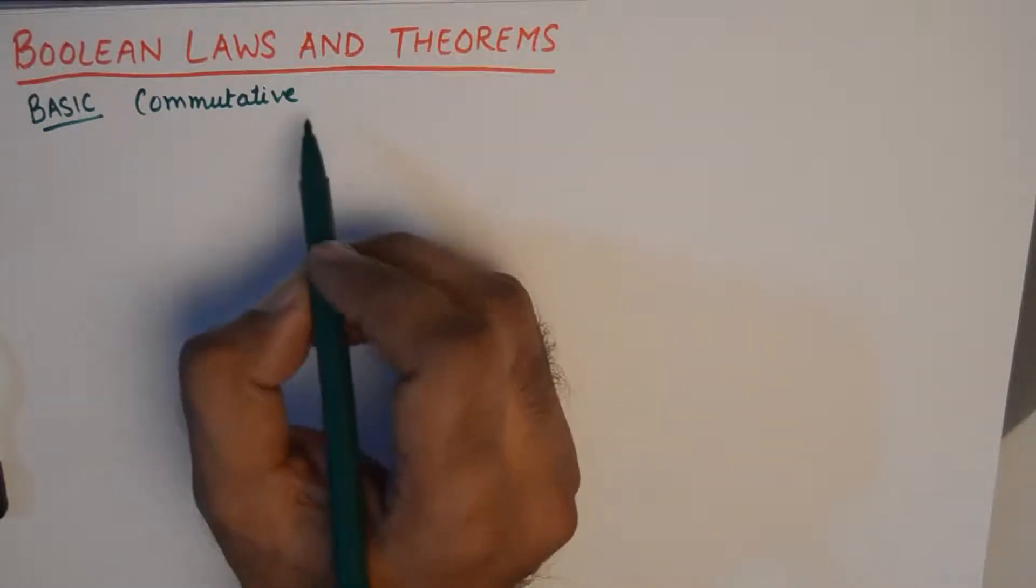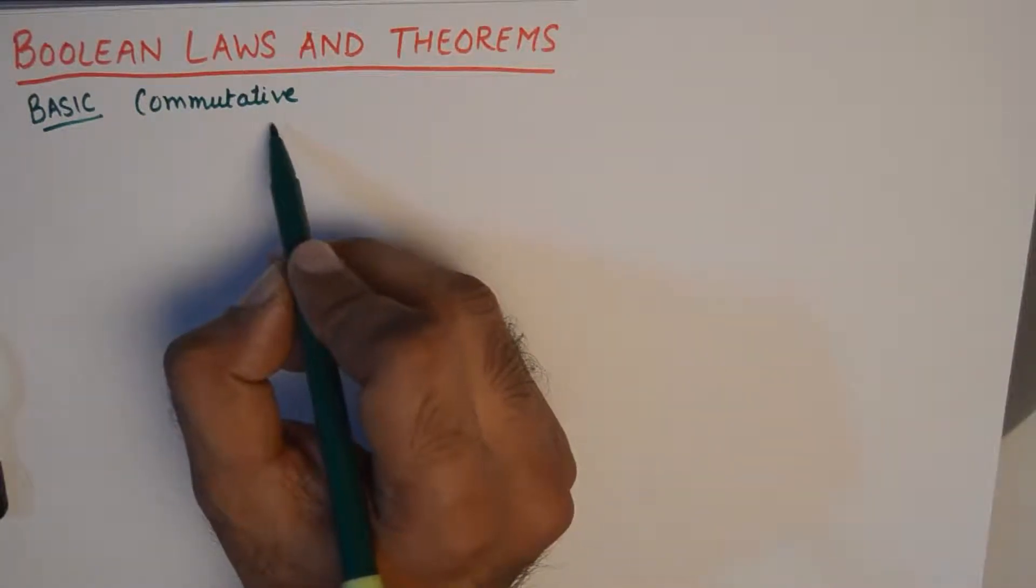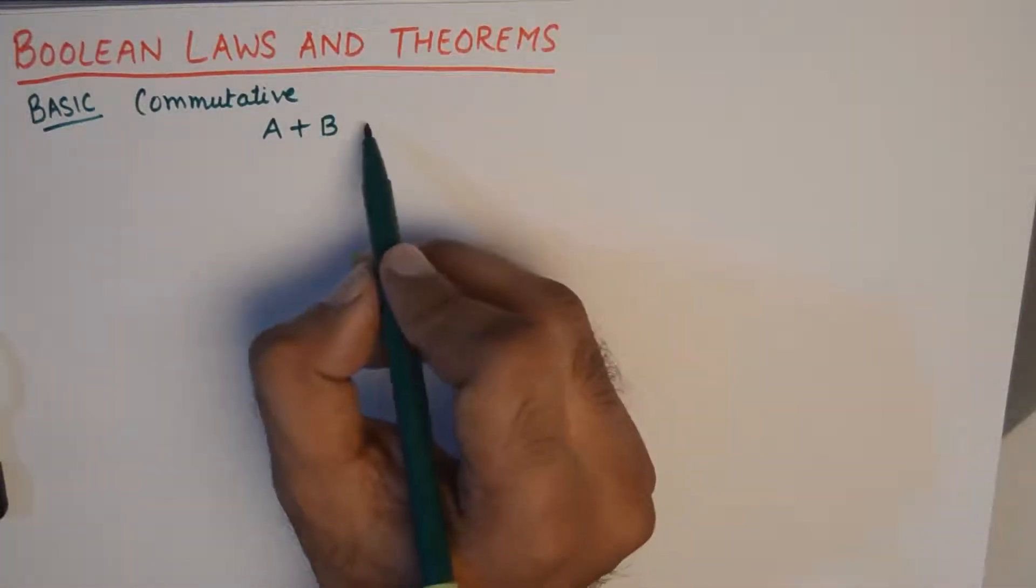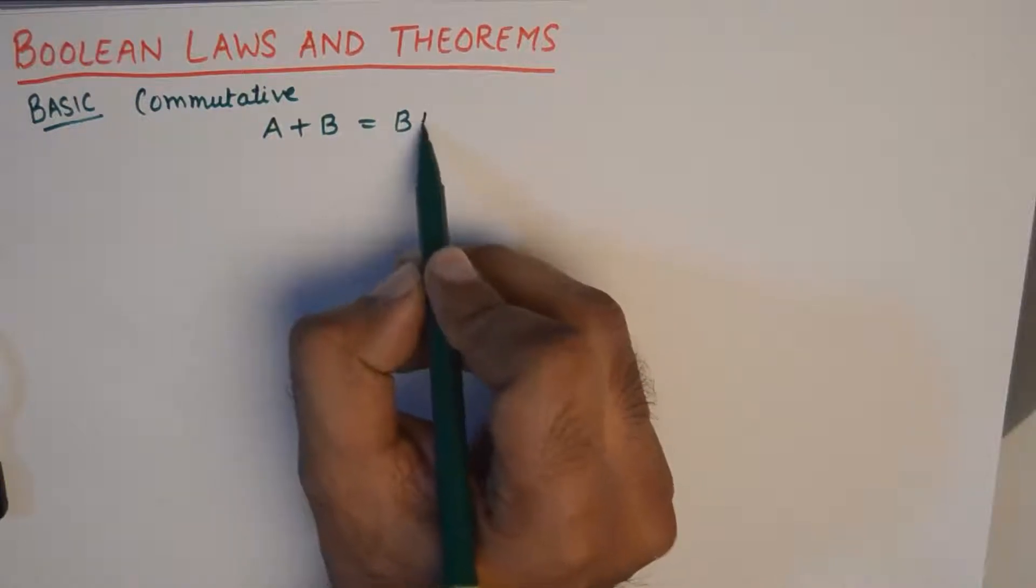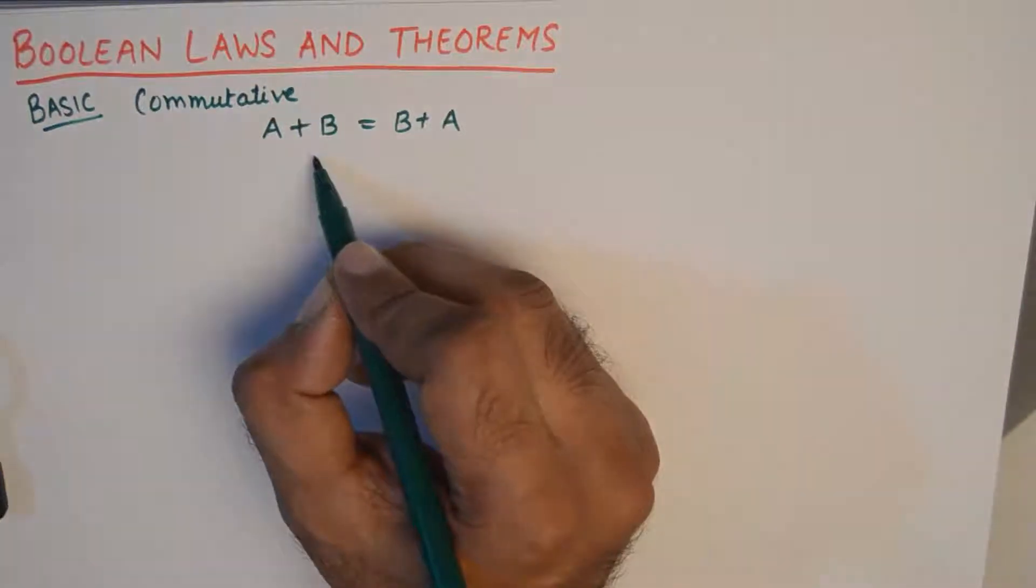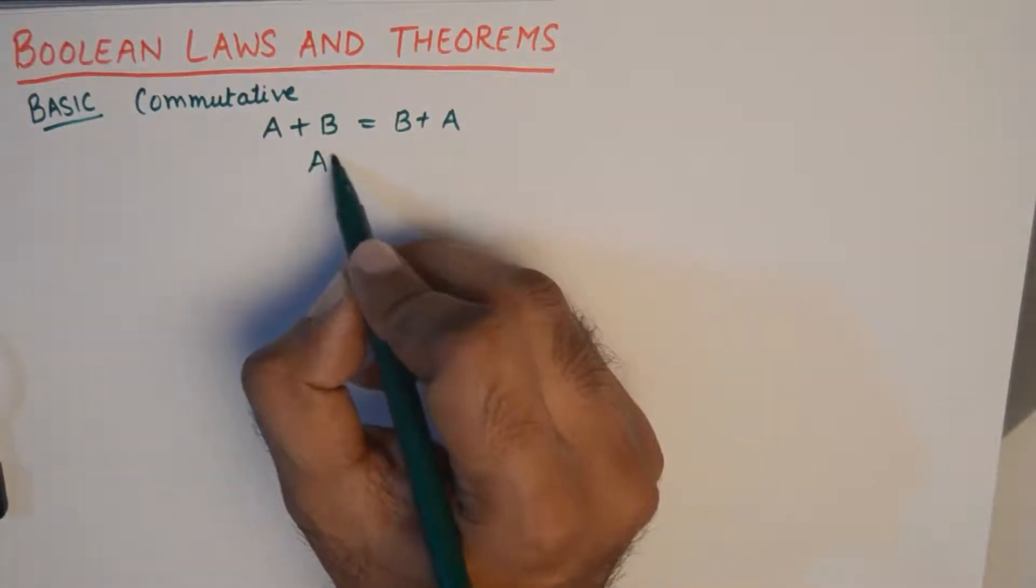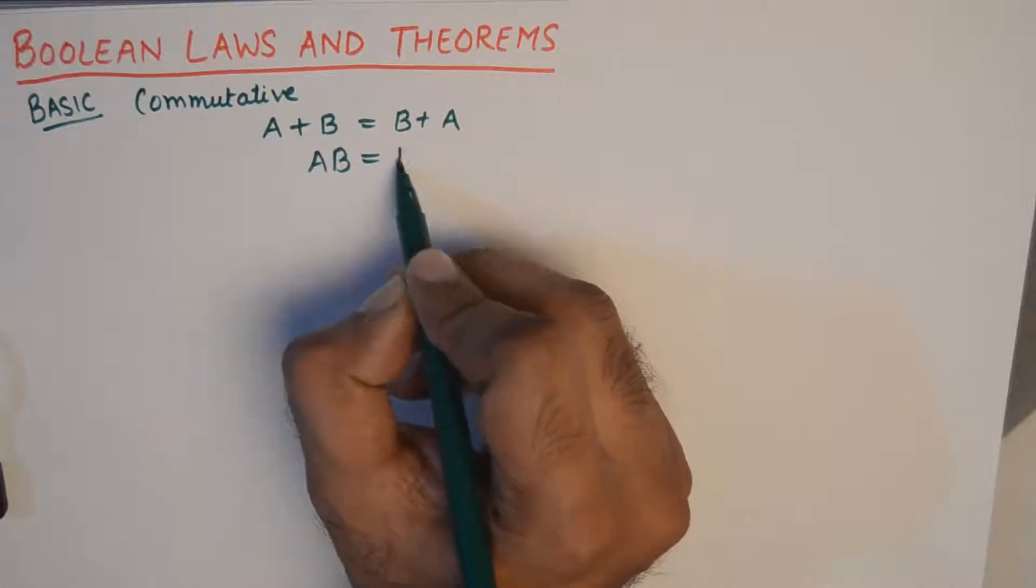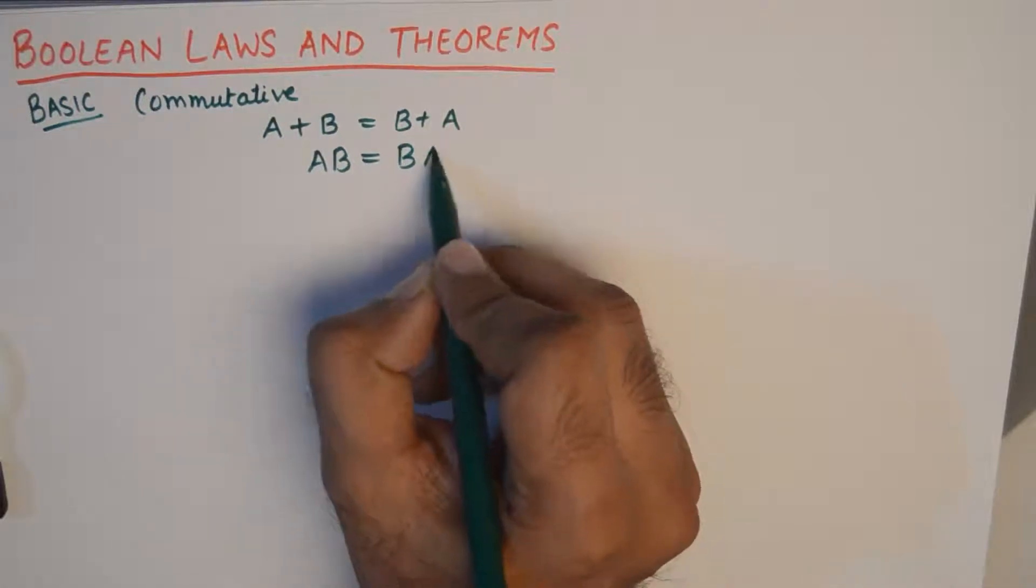Now under commutative law if there are two inputs it does not matter if we give A plus B or we give B plus A, it will yield the same output. And it does not matter if we give A into B or B into A, it will be the same thing.